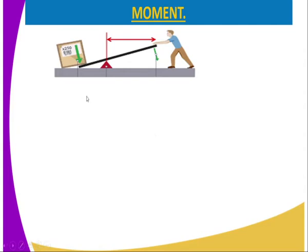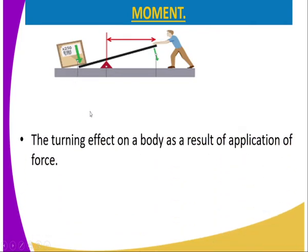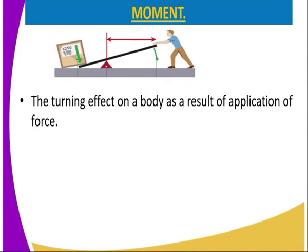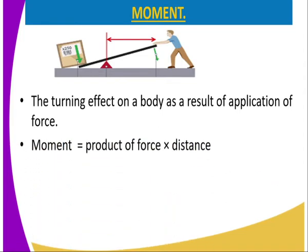That is, a vector quantity force in which direction - towards the ground - so that the load moves upwards. So once force has been applied, there will be a turning effect on the body which we refer to as moment. So the turning effect on a body as a result of the application of force is what we can simply refer to as moment. So it is basically defined as the product of force and the perpendicular distance from the turning point to the line of action of the force.